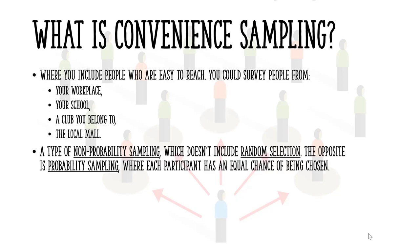Convenience sampling is a type of non-probability sampling. That means it doesn't include a random selection of participants. The opposite is probability sampling, where people are randomly selected and each person has an equal chance of being chosen.